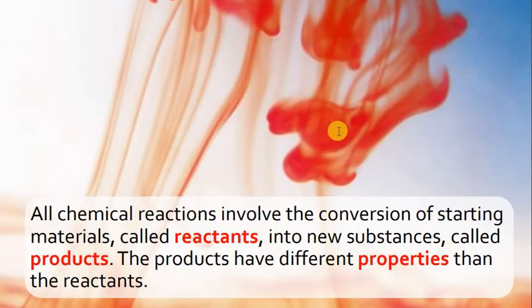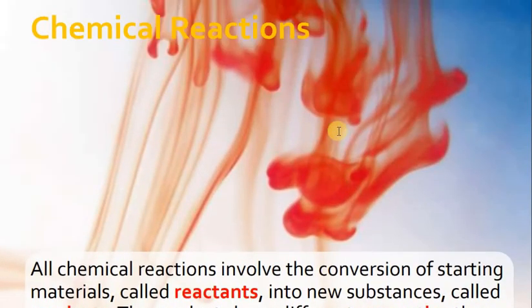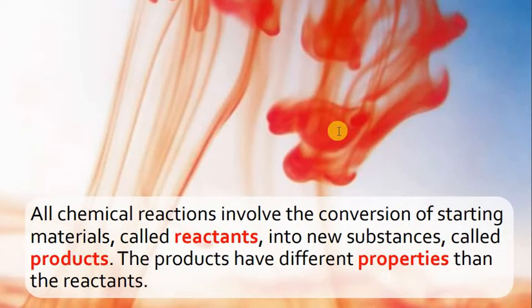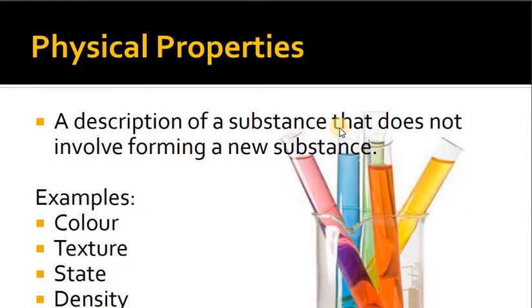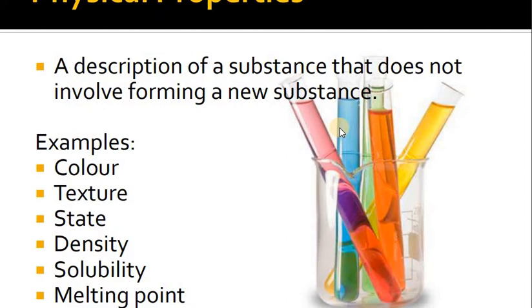In a chemical reaction, the reactant is converted to the product, and changes take place. The observable changes we have discussed include: temperature may increase or decrease, light may be absorbed or released, and sound may be produced or absorbed. Other characteristics include color change, precipitation, and changes in physical properties such as color, texture, state, density, and solubility.